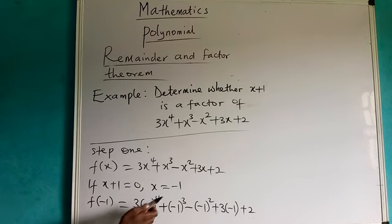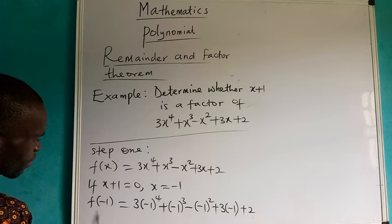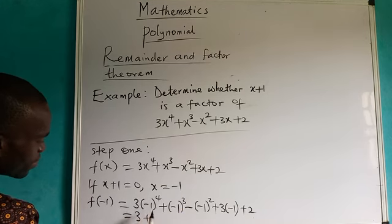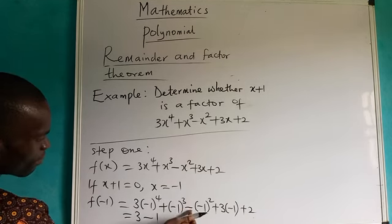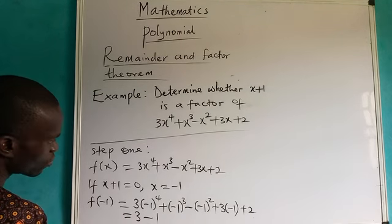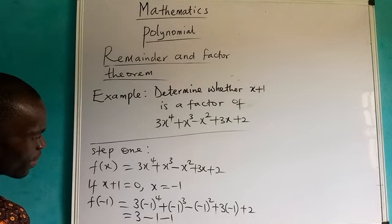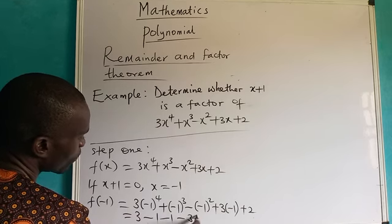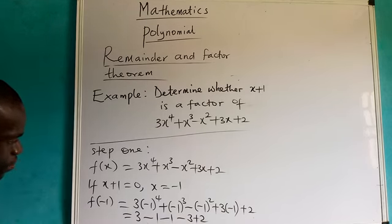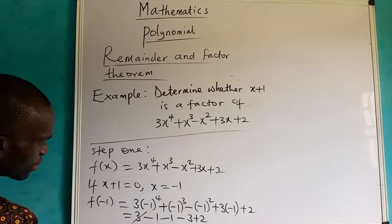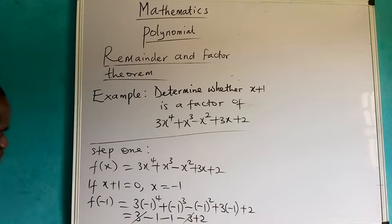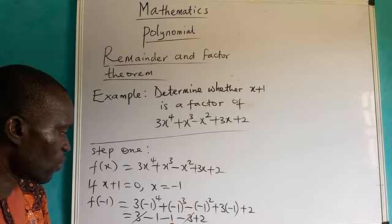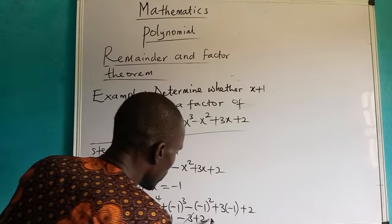Now I will solve this. Minus one to the power four is one, times three gives three. Minus one to the power three is minus one — that minus affects here, so it becomes minus one. Minus times minus is plus for the squared term; minus one squared is one. Three times minus one gives minus three. So we have three minus one minus one minus three plus two. Three minus three cancels, leaving minus one minus one, which is minus two, plus two.